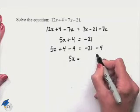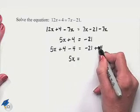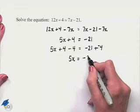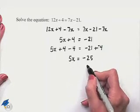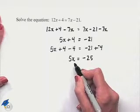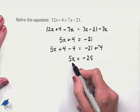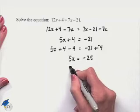5 times X equals -25. We can solve for X by using the inverse operation of multiplication, that is division, and we'll divide both sides of the equation by the coefficient of 5.